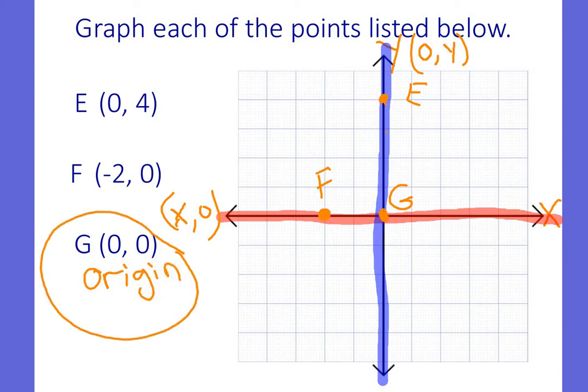Okay, but you have to remember the first number tells you whether you go right or left. So anything with a 0 in the x-value is going to be going straight up or straight down on your y-axis. Anything with a number for your x and a 0 for your y is just going to go right or left, and then it's going to stop.